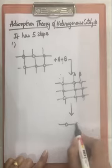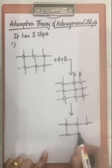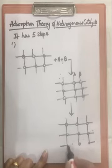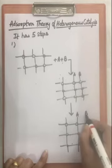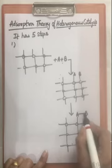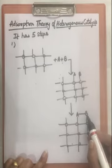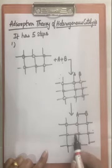Third step: now on the surface of catalyst, the two reactants will start reacting with each other. Chemical reaction takes place on the surface of the heated catalyst through the formation of an intermediate. Our intermediate stage will come here.